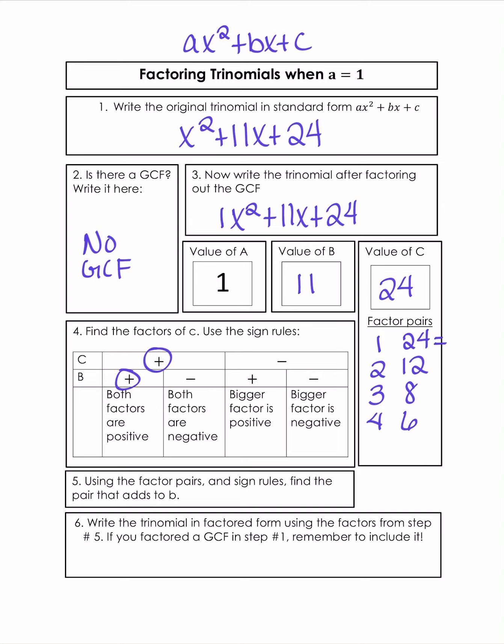So now let's go ahead and add our factors together. So 1 and 24 gives us 25. 2 and 12 is 14. 3 and 8 is 11. 4 and 6 is 10. So 3 and 8 is the correct combination, because that does add up to B. So 3 and 8 will be our factors.